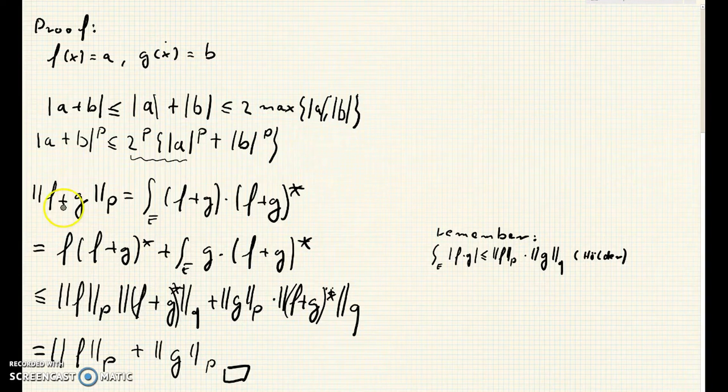And we need to prove the triangle inequality. We have that the p-norm of f plus g is by definition of the conjugate function of f plus g equal to the integral of f plus g times the conjugate of f plus g.